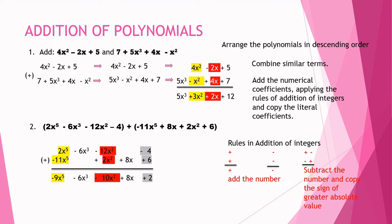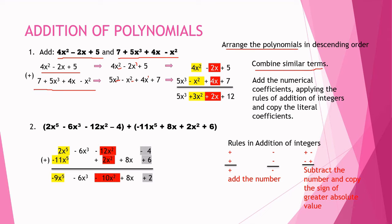Now let us proceed with addition of polynomials. Add 4x² − 2x + 5 and 7 + 5x³ + 4x − x². First, arrange each polynomial in descending order. The first polynomial is already arranged: 4x², −2x, then the constant 5. The second polynomial 7 + 5x³ + 4x − x² becomes 5x³ − x² + 4x + 7.